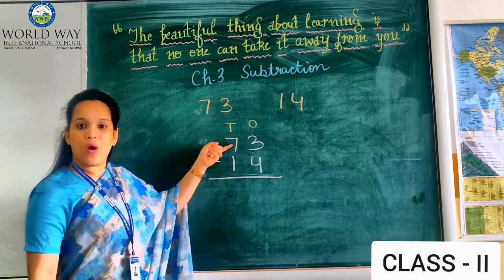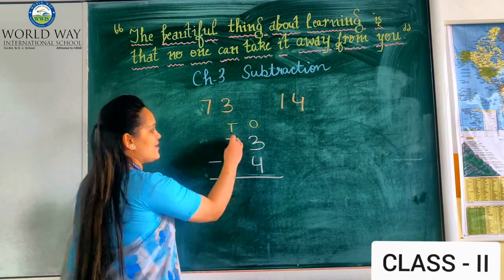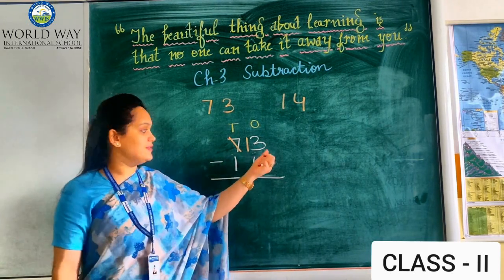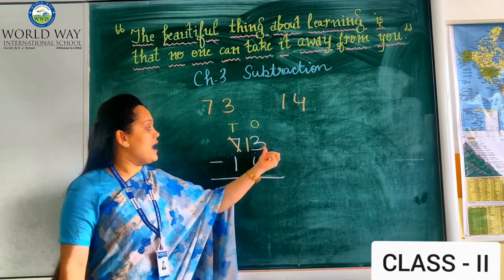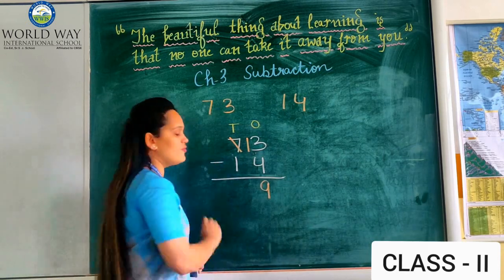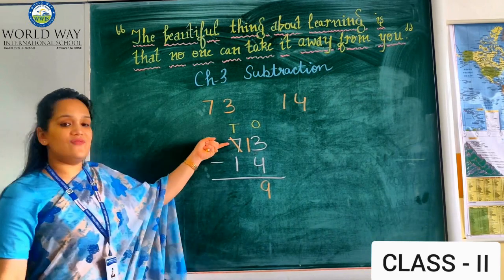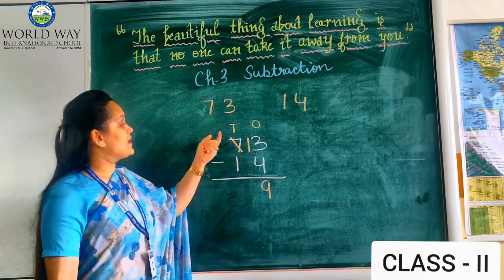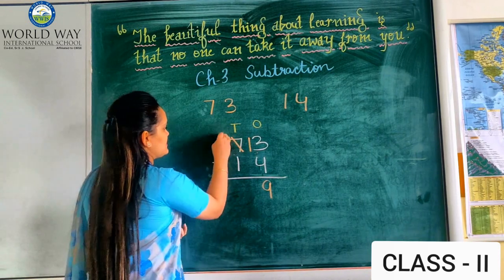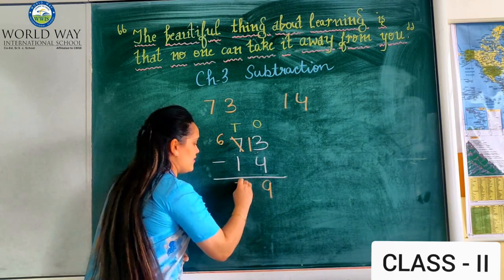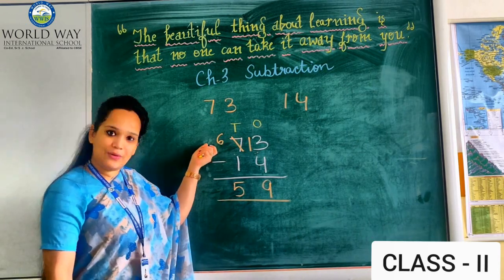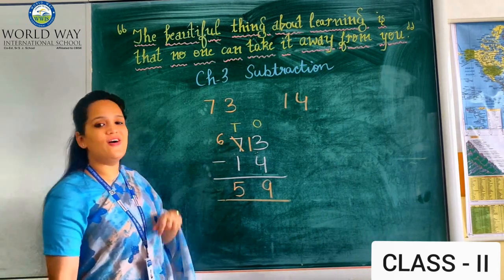Now let's look at a subtraction example. 3 will ask 1 time from his partner — this 7 will give 1 to his partner — and this 3 will become 13. Now 13 minus 4 is possible, so 13 minus 4 will be 9. And now this 7 will become 6, because 7 has given 1 to his partner. So 6 minus 1 will be 5, that means 59 is your difference, and 59 is less than 73.